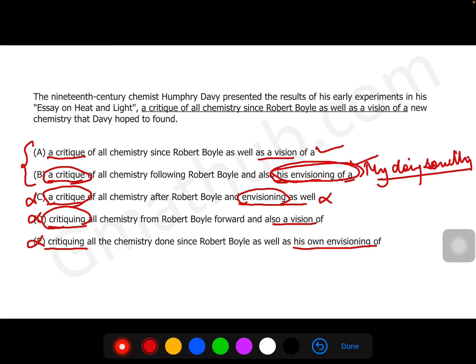Now, how do we remove the wrong one here? As well as a vision of, and also his envisioning of. If you see, this is more wordy, option B. If you have to write something, this is a better way of writing. It is a crisp way of writing. Since Robert Boyle, following Robert Boyle. Following Robert Boyle gives us a meaning that chemistry is following Robert Boyle. No. So B is out. It is not very difficult to remove B. A is the right one.